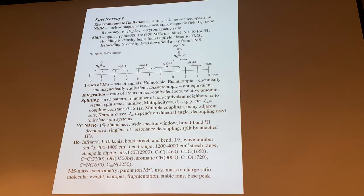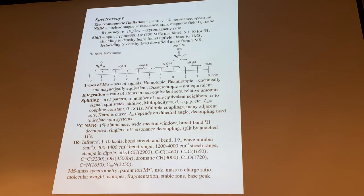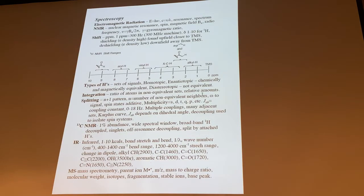Lindlar — half reduction to give the cis-alkenes — or reduction with sodium and ammonia to give the trans-alkenes. I'll go through different examples of these on the board. These materials are all in the 351 topics file on Learning Suite. NMR — there'll be a data sheet with a graphic to help you remember proton shifts. Splitting: the n+1 rule — how many neighbors show up determines the multiplicity. If you have two neighbors for a given methylene, it'll show up as a triplet. Three neighbors gives a quartet.